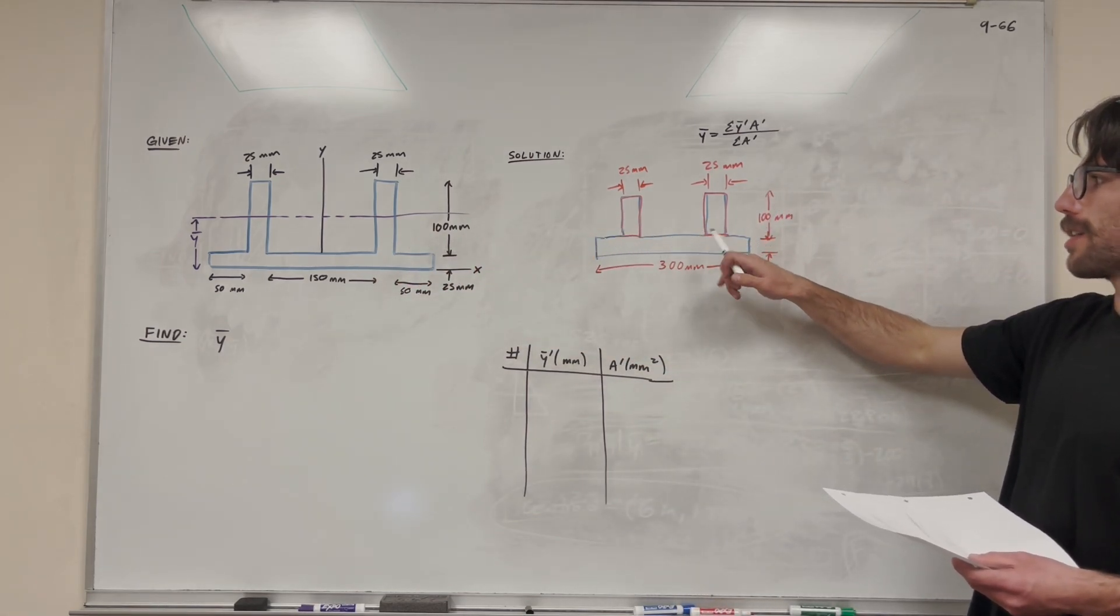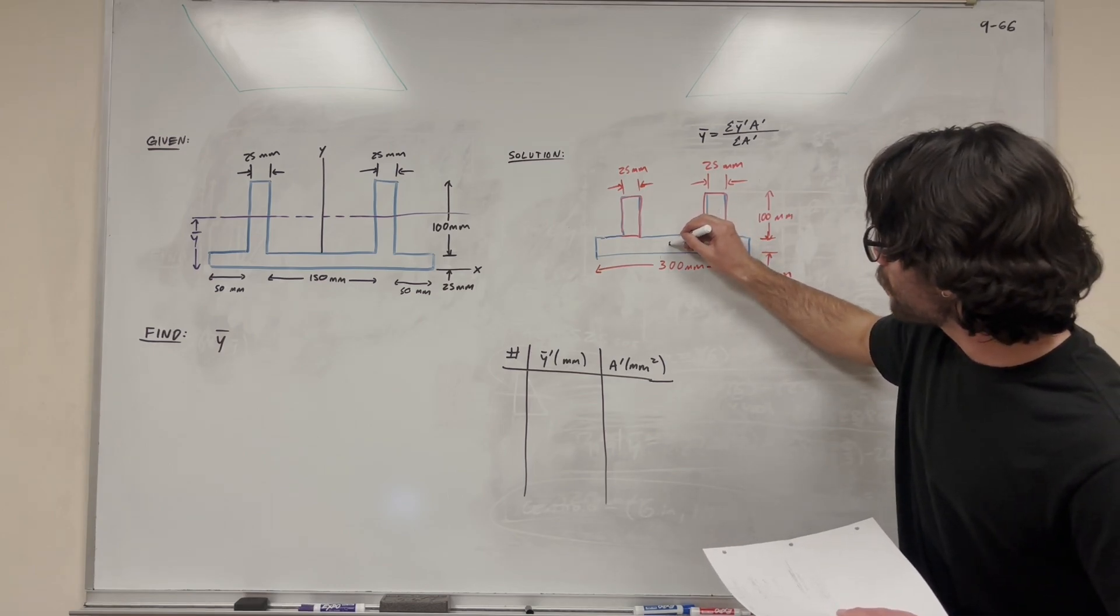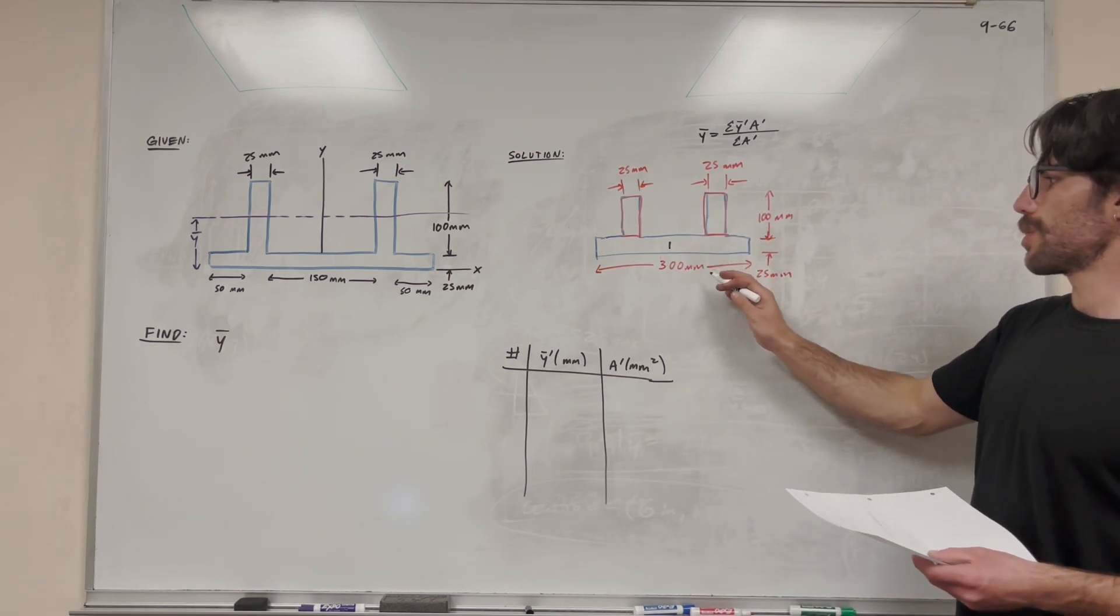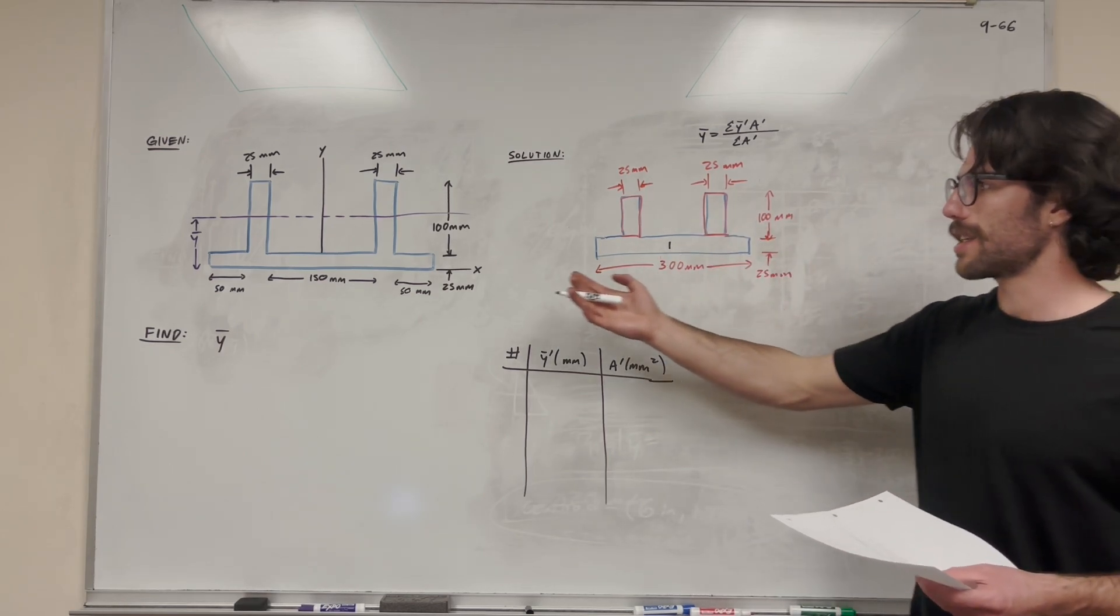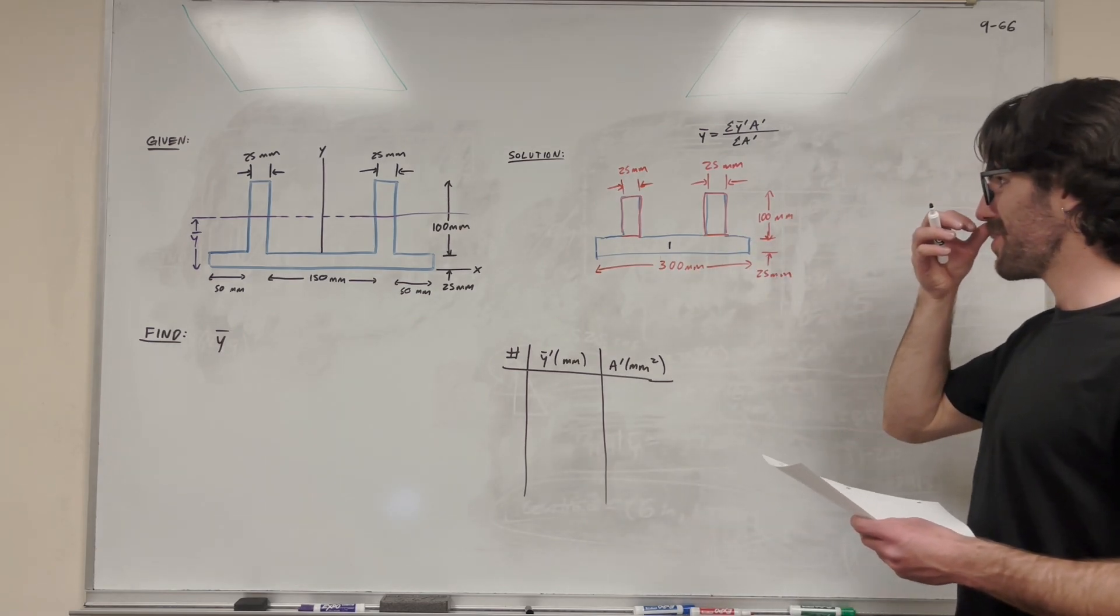So I have a big rectangle on the bottom here which we're going to call shape number one. Now it's 300 wide, 25 tall. That's just basically breaking up the numbers that are given to us.